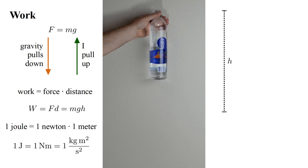So in base units the joule is one kilogram meters squared per second squared. Since velocity is meters per second, we see that the units of work are the same as the units of mass times velocity squared.